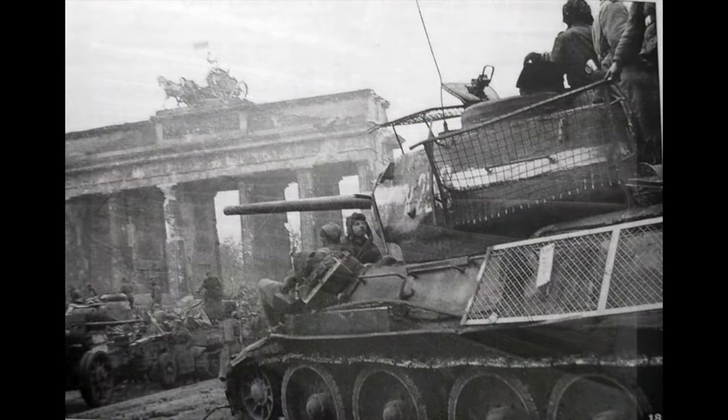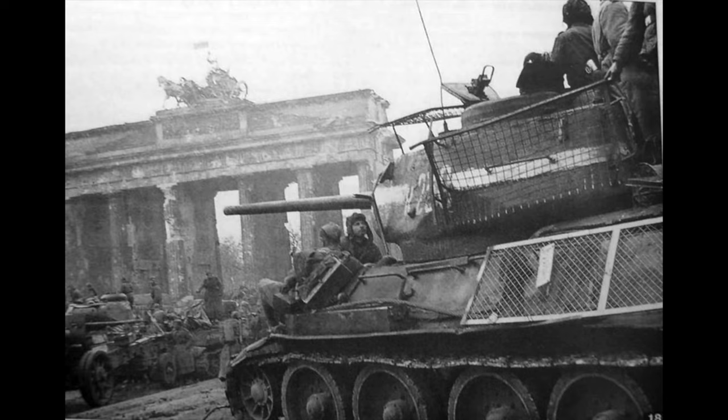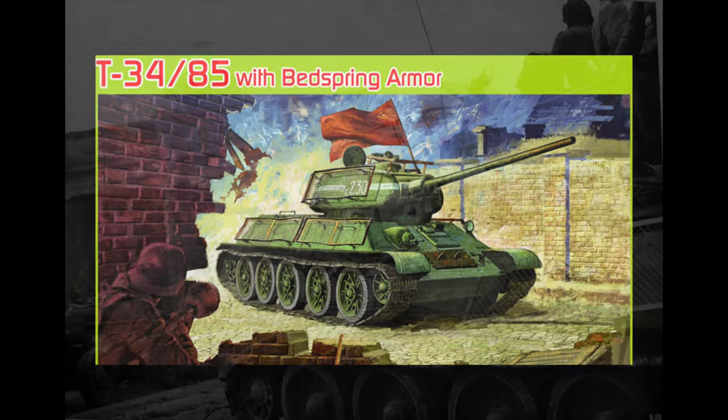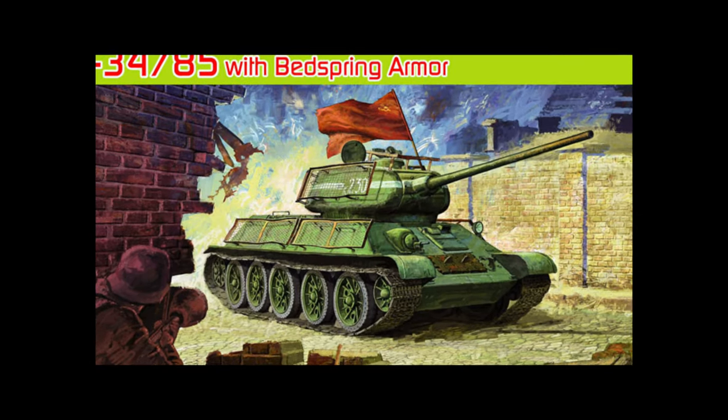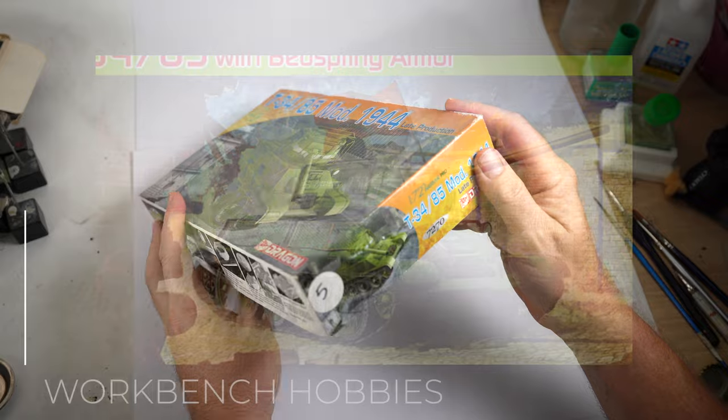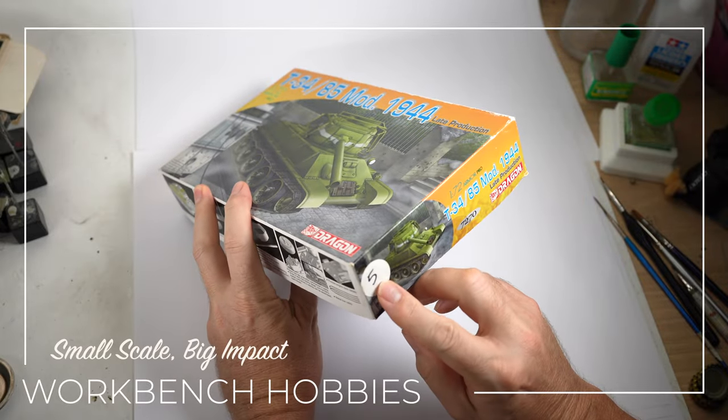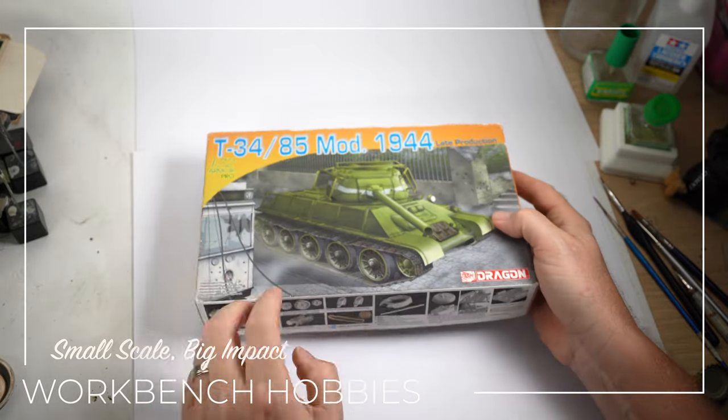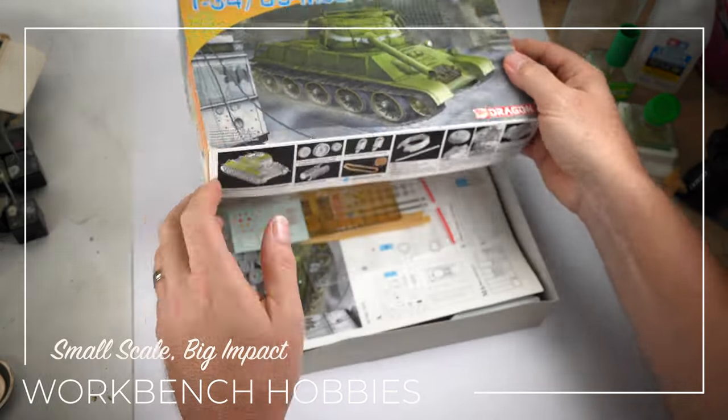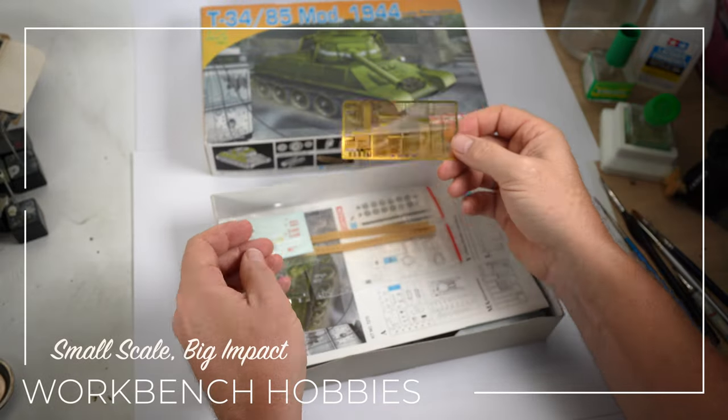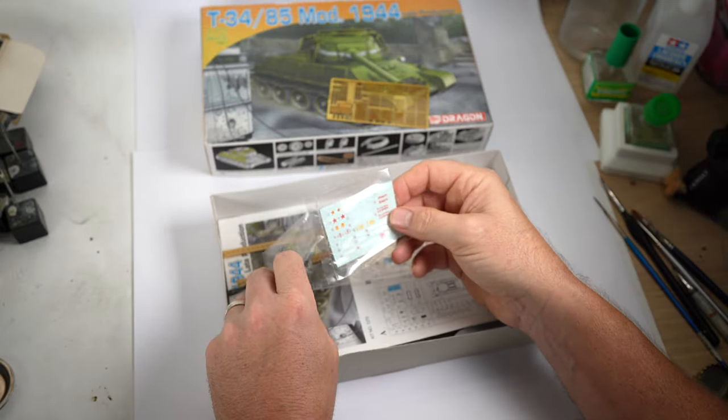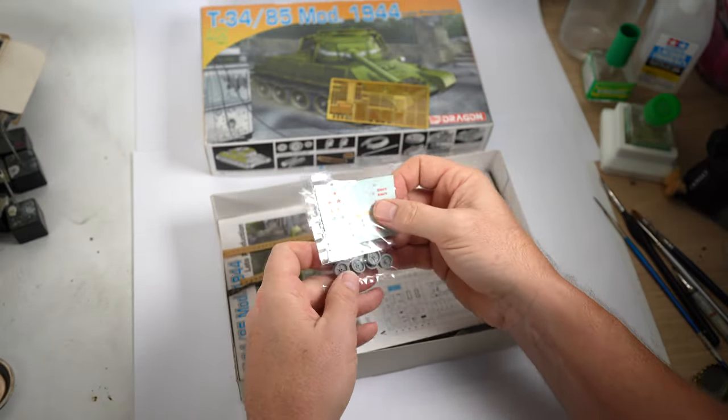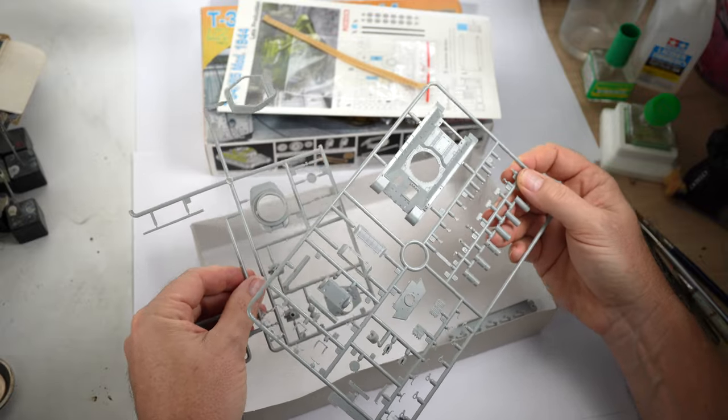I've long had the 35th scale Dragon bed spring armor version in the stash, and I'll get to that one day. But given my tight build schedule, I turned my attention to the downscaled version I picked up for $5 at a swap and sell, and I'd build myself a 72nd scale bed spring armor that wasn't actually bed springs, T-34-85 to add to my collection.